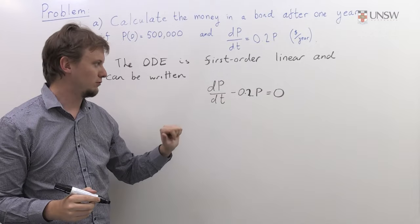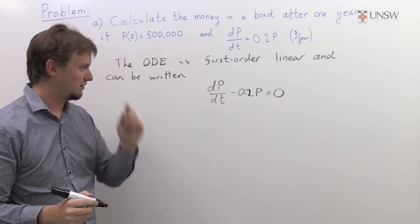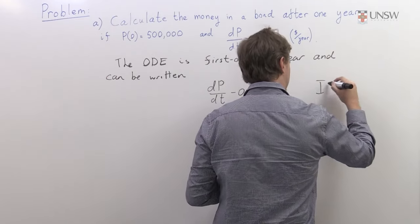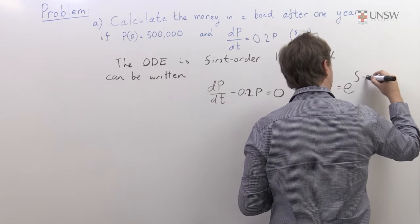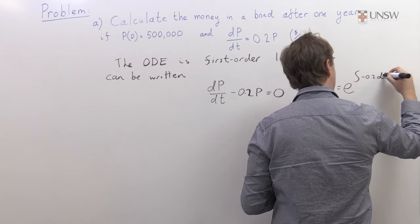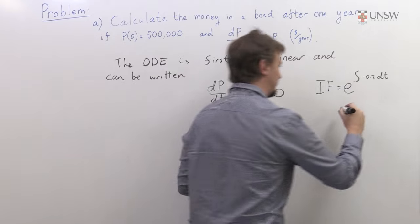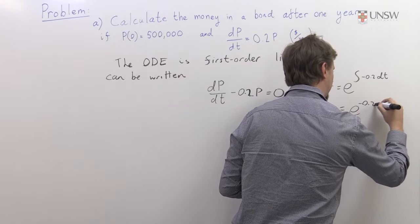Remembering our technique for first-order linear equations, we are just going to search for the integrating factor. The integrating factor is just e to the integral of minus 0.2 dt. If you integrate that, you get e to the minus 0.2t.